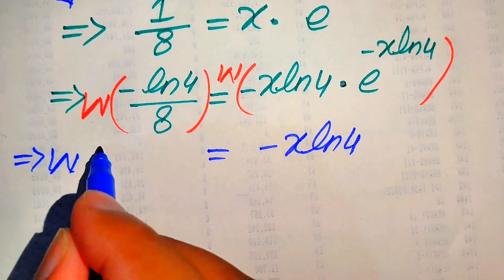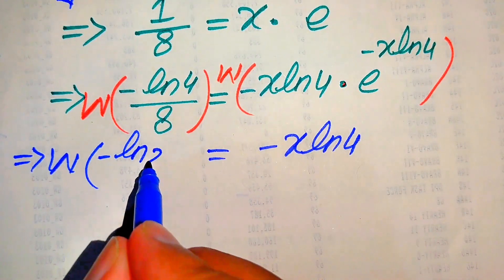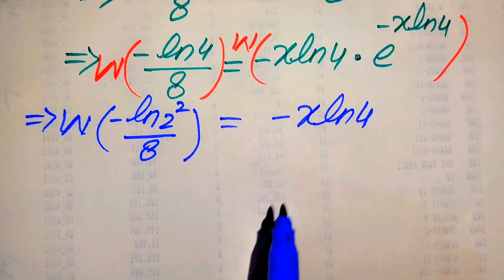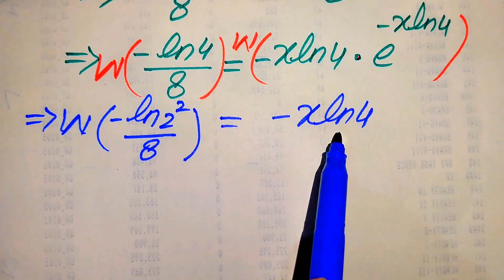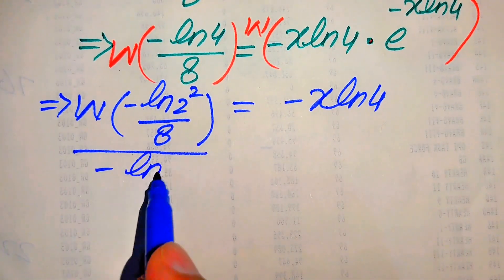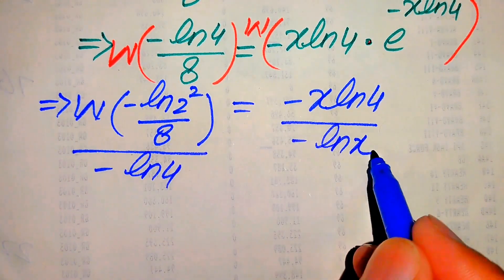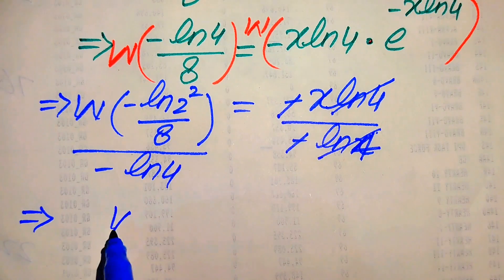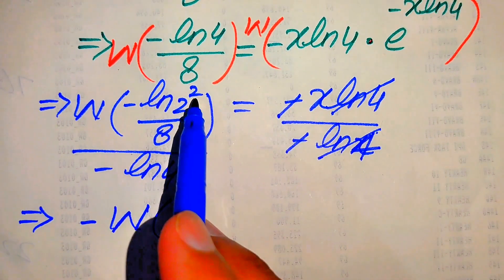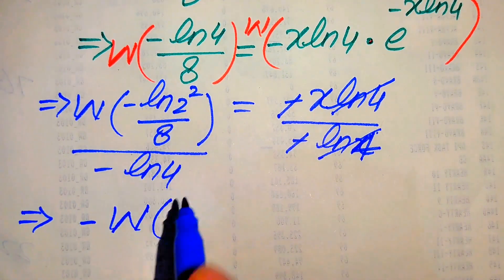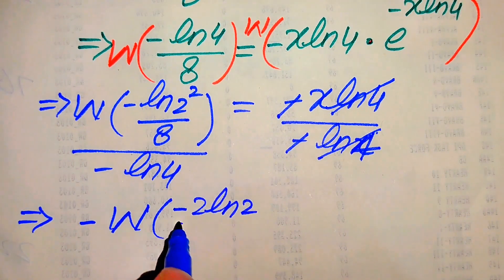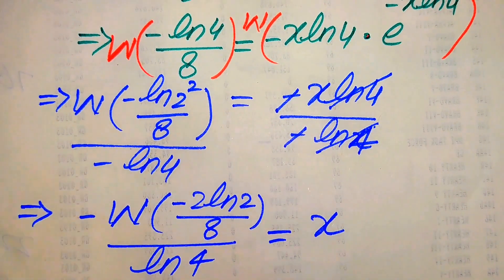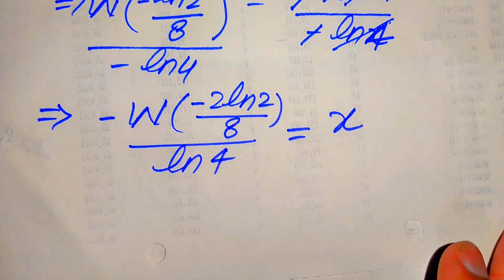Applying the Lambert W function on the right-hand side, the output is the exponent of e, which is -x · log 4. On the left-hand side we have W(-log(2²)/8). To isolate x, we divide both sides by -log 4. The negatives cancel and the log 4 cancels, leaving x = -W(-log 4 / 8) / log 4.